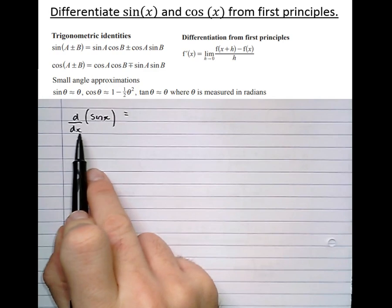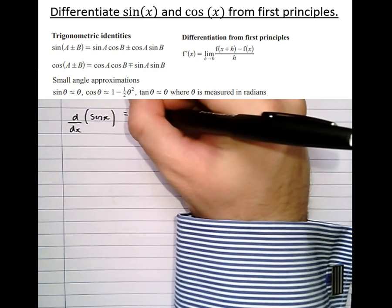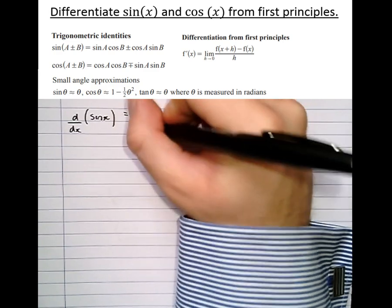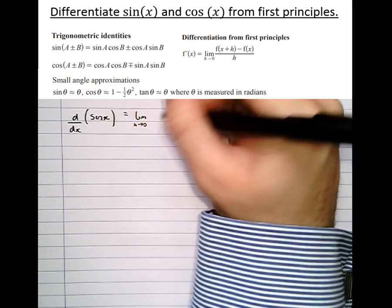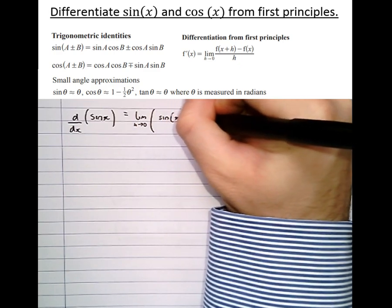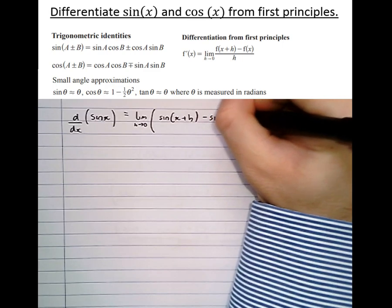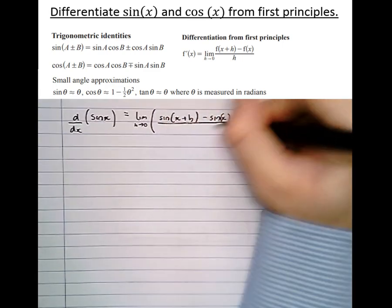We're going to differentiate d/dx of sin x. Subbing that into the differentiation from first principles formula, the limit as h tends to 0 of f(x+h), that's sin(x+h), take sin x, take f(x), all over h.